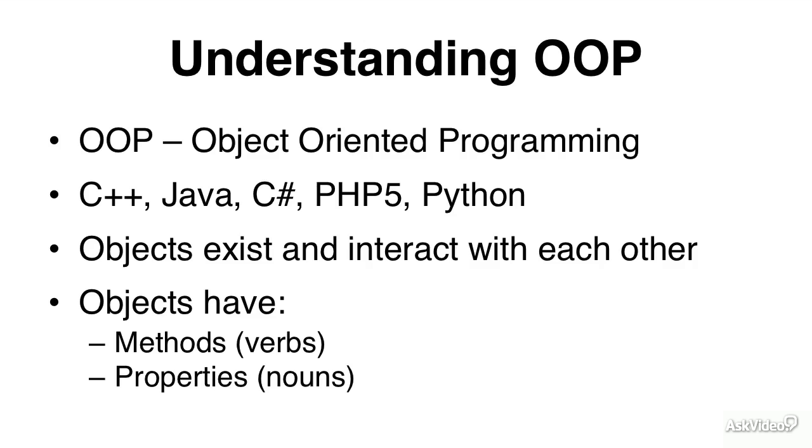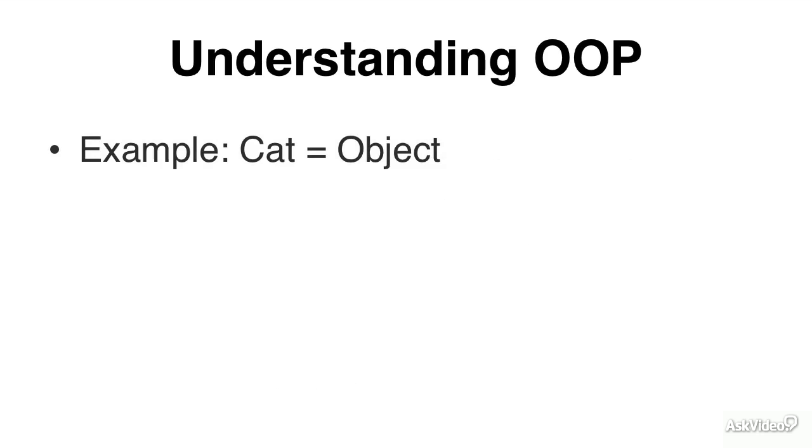So let's have a look at this in another example. We have an object, which is a cat. The method would be purr. Notice the parentheses - it's the open bracket and closed bracket afterwards. This is a verb. You can instruct the cat to purr, and then the cat will purr. This is the action.